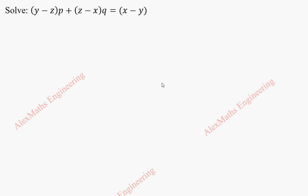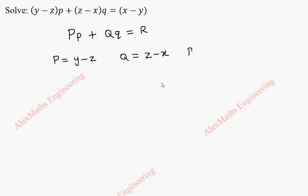Hi students, this is Alex here. In this video, I am going to solve the given partial differential equation. This is of the form capital P into small p plus capital Q into small q equal to capital R. By comparison, we get capital P as y minus z, capital Q as z minus x, and capital R as x minus y.